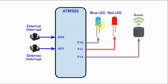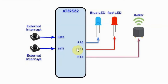When interrupt 0 finishes, normal execution resumes and the two LEDs alternate again. When the second button is pressed, interrupt 1 is generated, triggering the buzzer, and the red LED blinks fast 15 times, after which the two LEDs alternate again. The microcontroller is programmed so that interrupt 0 has higher priority than interrupt 1. If interrupt 0 occurs while interrupt 1 is being serviced, it will immediately cancel interrupt 1 and execute the interrupt 0 service routine.